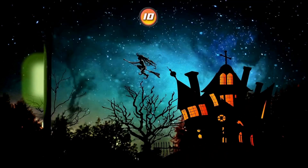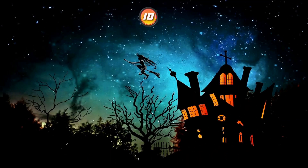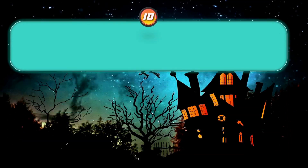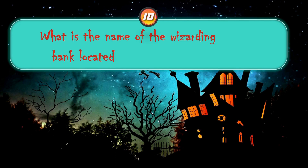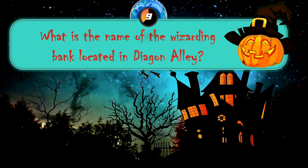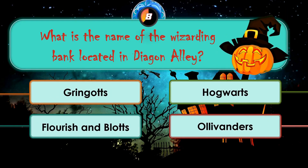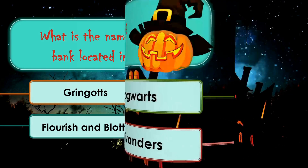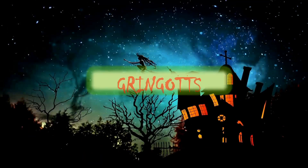Moving to next question: what is the name of the wizarding bank located in Diagon Alley? Gringotts, Hogwarts, Flourish and Blotts, Alleyvenders. The correct answer is Gringotts.